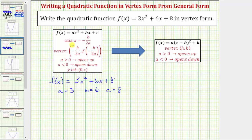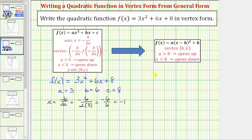So now we'll find the equation of the axis of symmetry, which is x equals negative b divided by two a, which in this case would be negative six divided by two times three. Simplifying, we have negative six divided by six, which equals negative one. So now we know the equation of the axis of symmetry is x equals negative one, and we also know the x coordinate of the vertex is negative one.